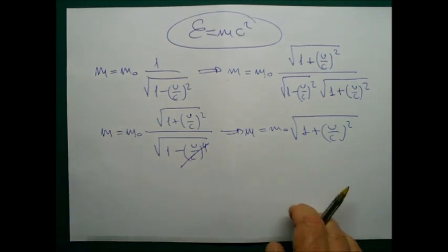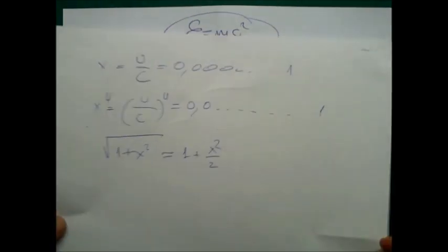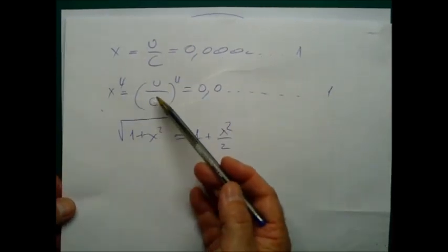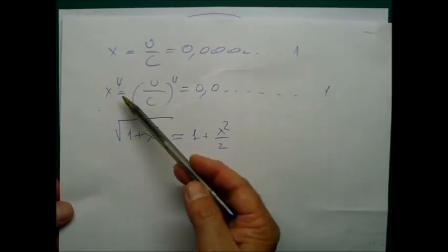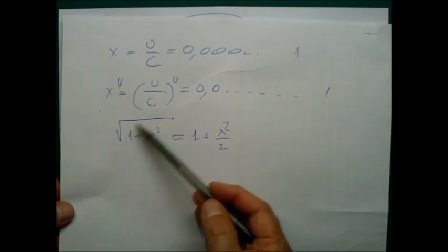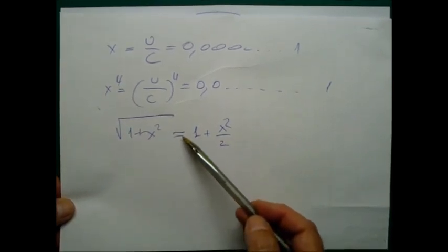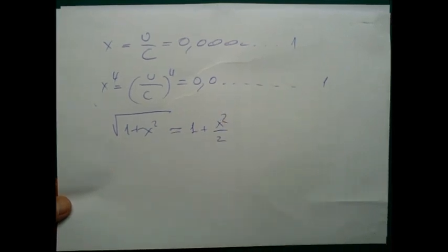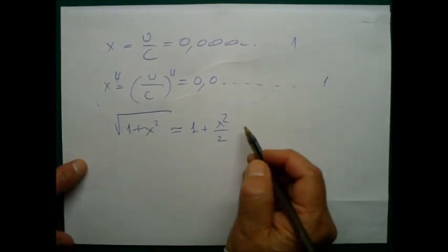Now, if a number X is very small, I have the following: the square root of 1 plus X squared is approximately equal to 1 plus X squared over 2. I can prove that if X is very small.